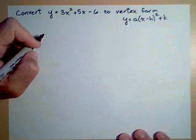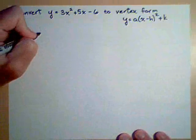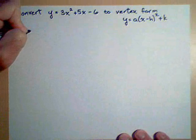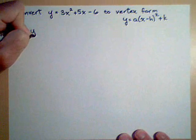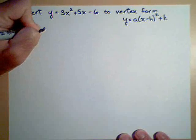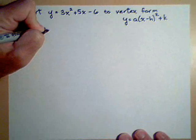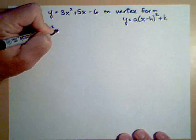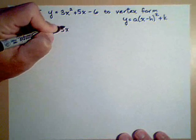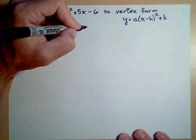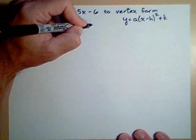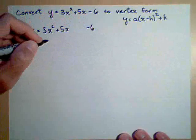We're going to use a technique called completing the square. So the first thing we want to do is group our terms. Y equals 3 times x squared plus 5x, and then we'll have the minus 6 at the end. And we'll talk about what's going to happen in this space.